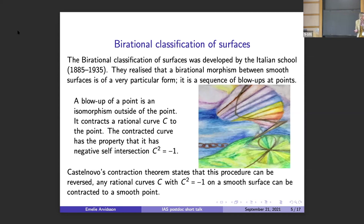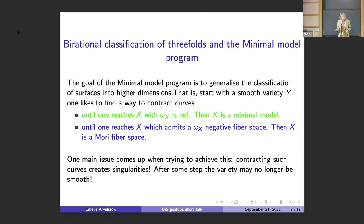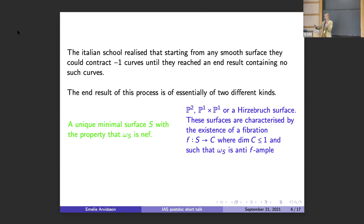A blow-up of a point replaces the point with a rational curve, and that rational curve has the property that its self-intersection is minus one. Castelnuovo realized that if you have any minus-one curve on a smooth surface — a rational curve with self-intersection minus one — then you can contract this curve to a point. The Italians realized that to do this classification of smooth surfaces, what they needed to do was to contract minus-one curves. This process stops and you find smooth surfaces that do not have any curves of this kind — smooth surfaces that are not the blow-up of another smooth surface, so they are minimal.